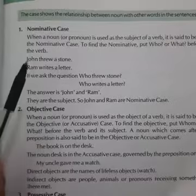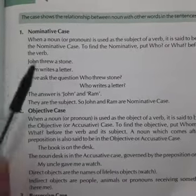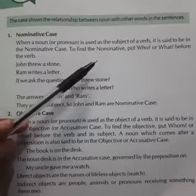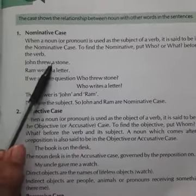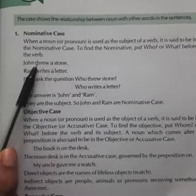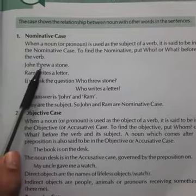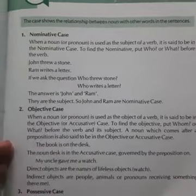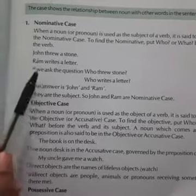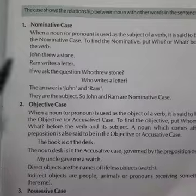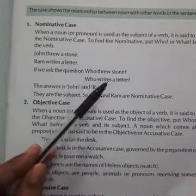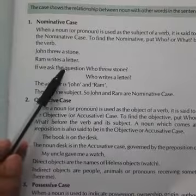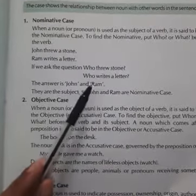Let's see the examples: 'John threw a stone' and 'Ram writes a letter.' To find the nominative case in a sentence, we frame a question — 'Who threw the stone?' The answer is John. 'Who writes a letter?' The answer is Ram.